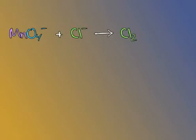Balancing redox reactions is pretty intuitive, but we will go through an example to make sure it's clear. Suppose we have permanganate added to chloride ions, yielding chlorine gas and manganese 2+, all in an acidic solution.